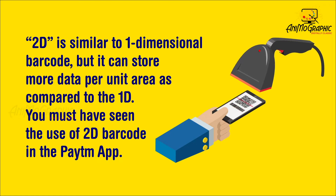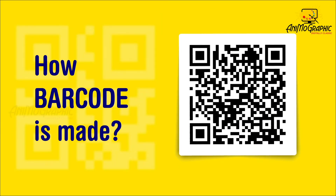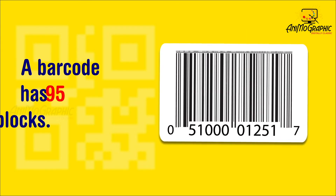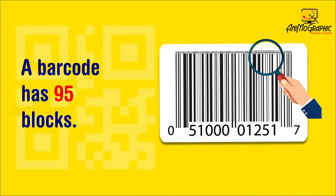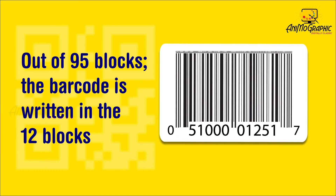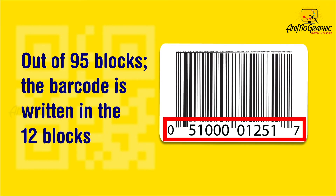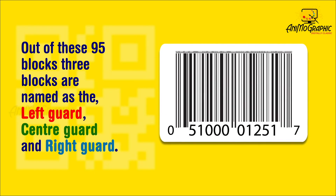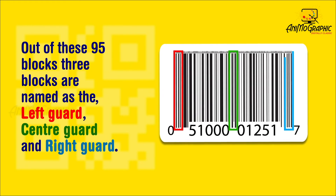You must have seen the use of 2D barcode in the Paytm app. How is a barcode made? A barcode has 95 blocks. Out of these 95 blocks, the barcode data is written in 12 blocks. Additionally, 3 blocks are named as the left guard, center guard, and right guard.